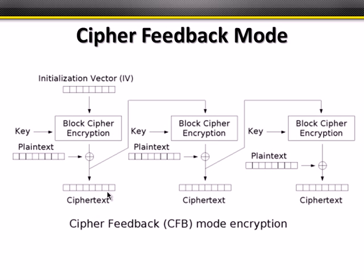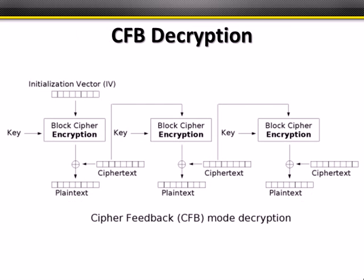Cipher Feedback Mode (CFB) is slightly different. We still encrypt the initialization vector, but the feedback line shifts: we take the output after the XOR as the next item. It's a similar concept — using one block to encrypt the next block in the chain — but the feedback point differs from CBC.